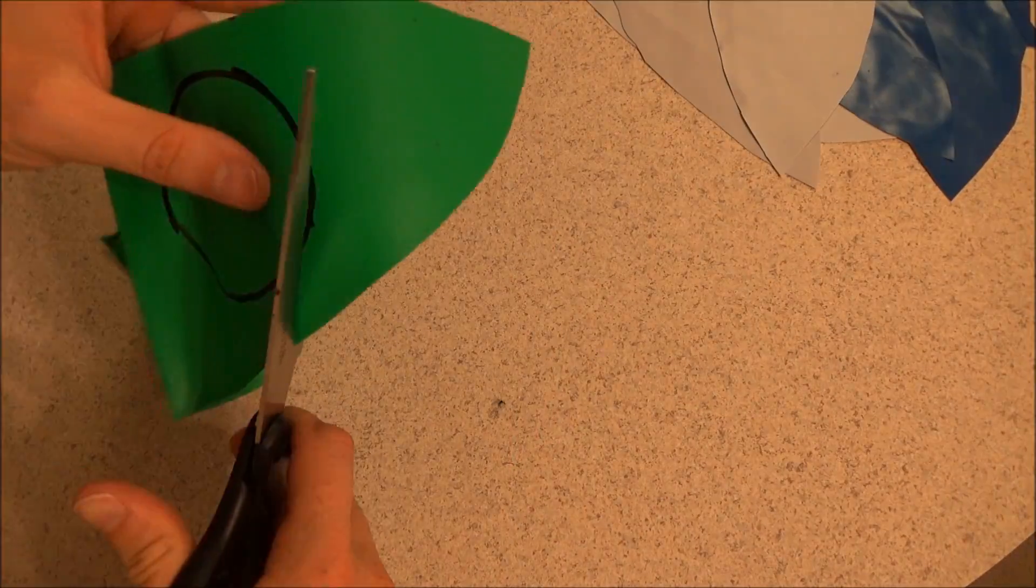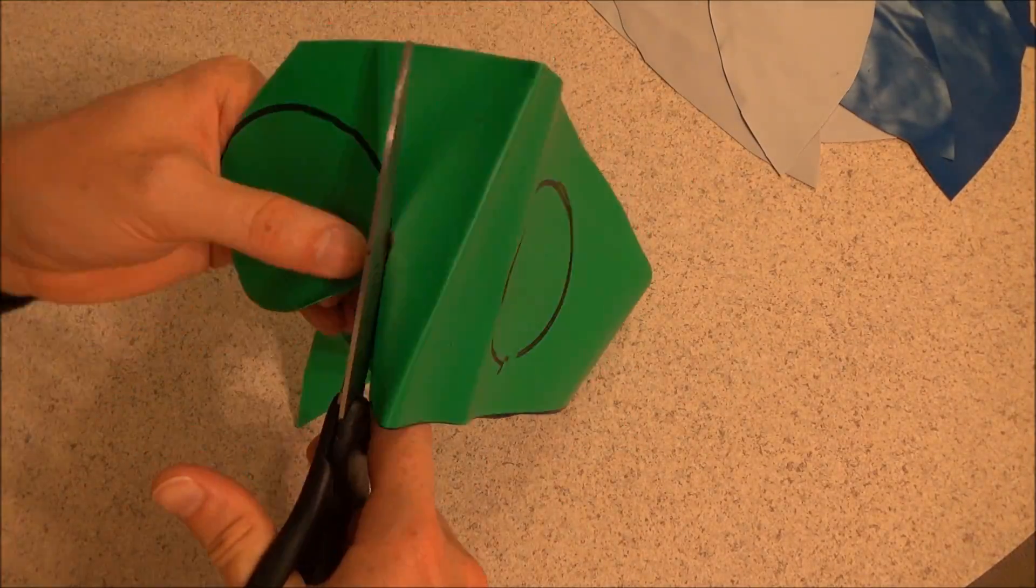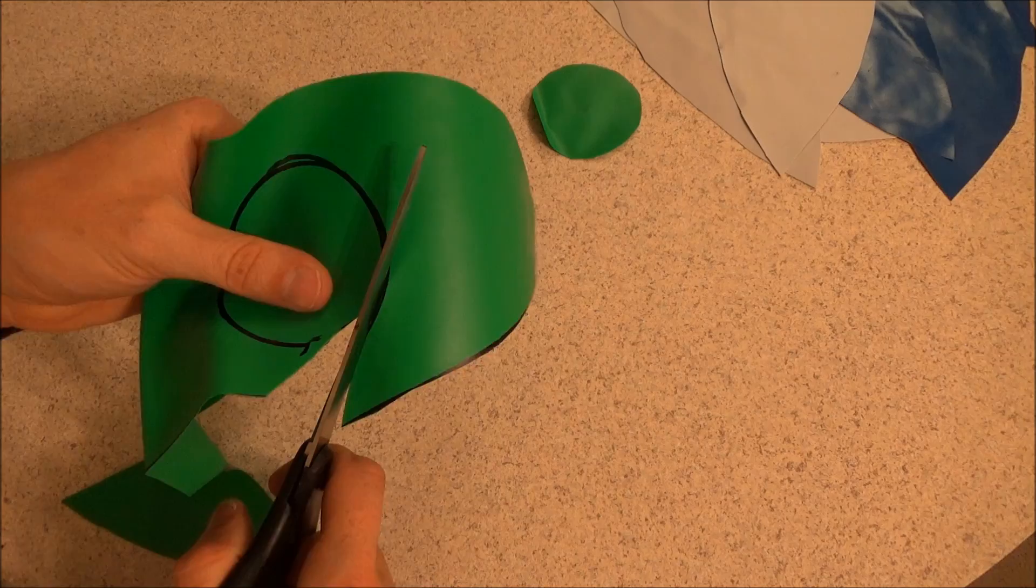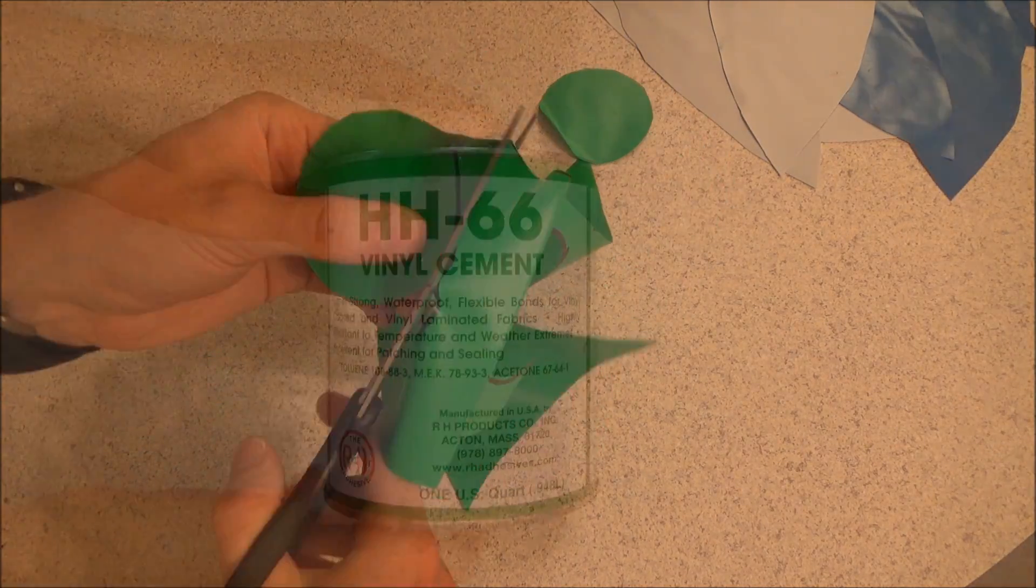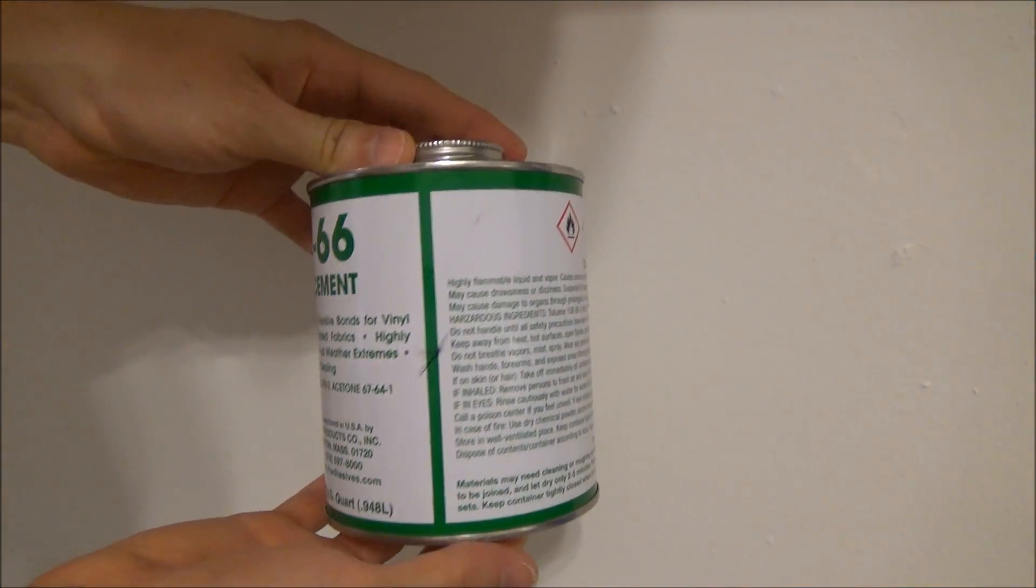Alright, now here begins my experiment. Determining the panel shape and cutting them out was not too hard. I choose to use a chemical welding solvent to assemble my first beach ball.